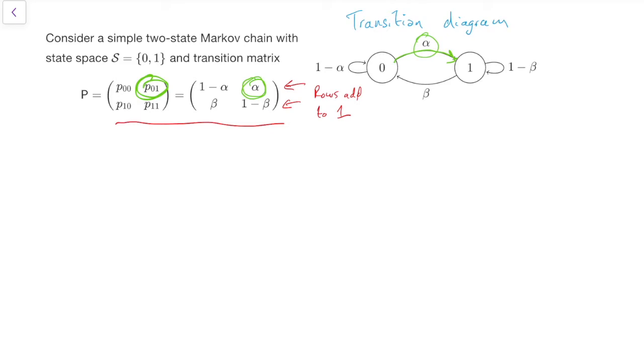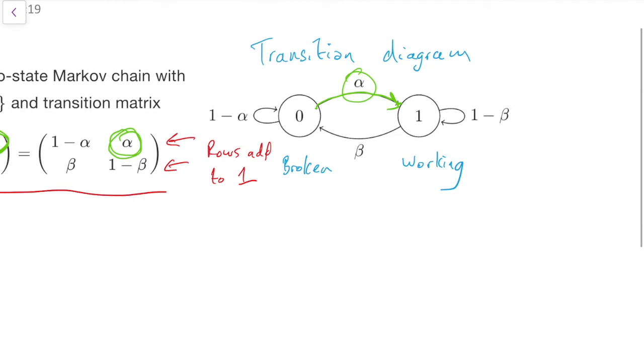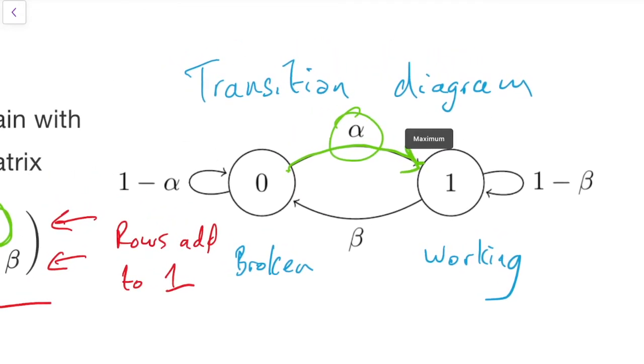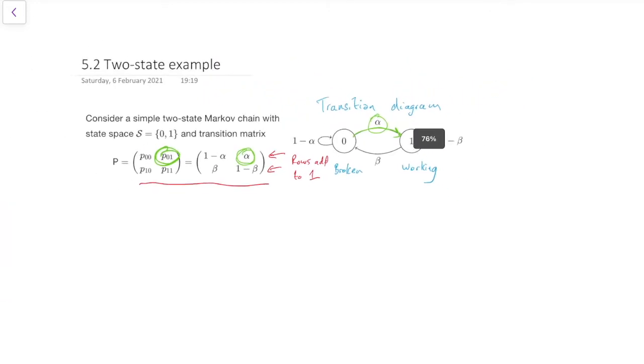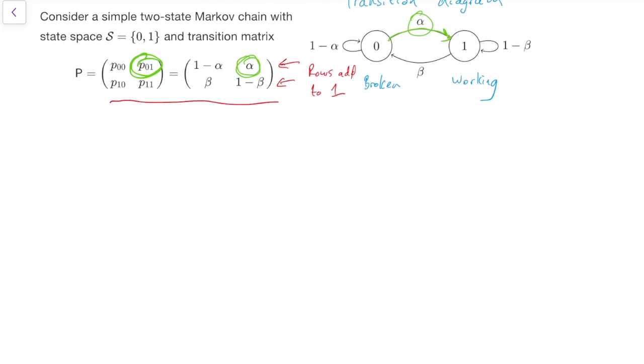I suggest in the notes that this could be used as a model for something like a broken printer each day. We could let state 0 be broken and state 1 be working, and we could say that on each day, the broken printer gets fixed with probability alpha, or the working printer breaks with probability beta, and that would give us this Markov chain here. So let's see how we can answer some questions with this.